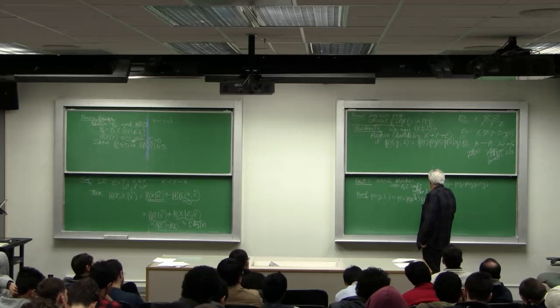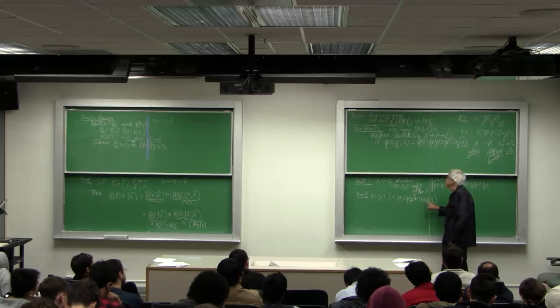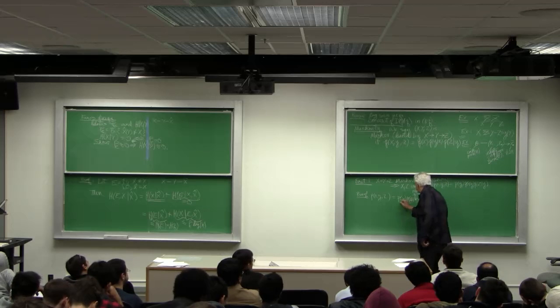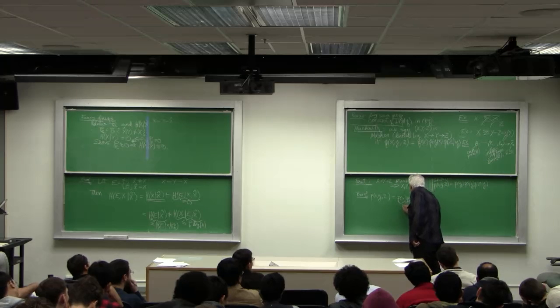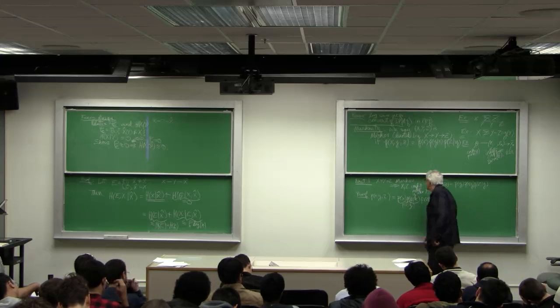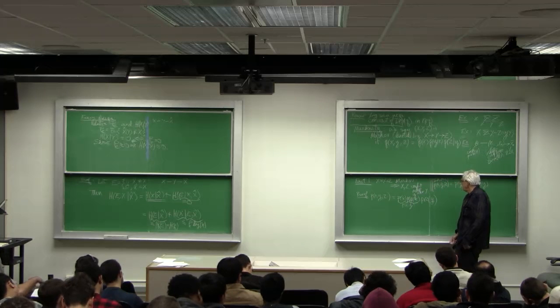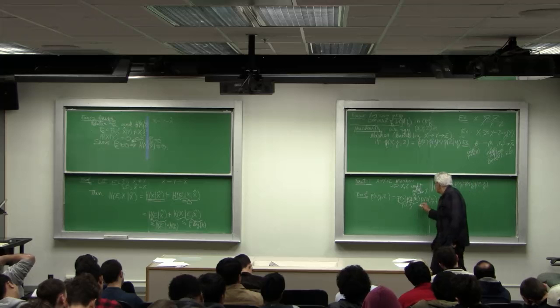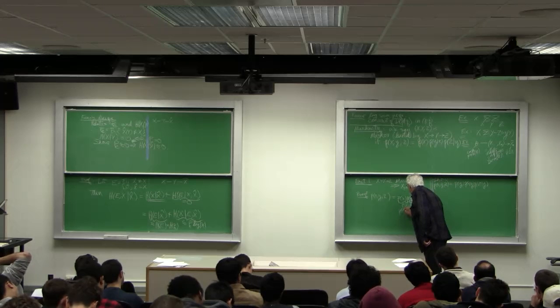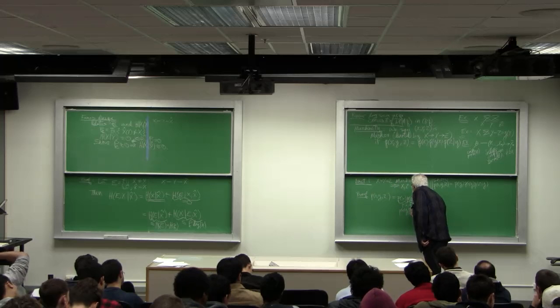So let's do that. Here's our definition of Markovity. Let's rewrite this as P of X comma Y, the joint distribution. And then rewrite this as P of X given Y times P of Y.